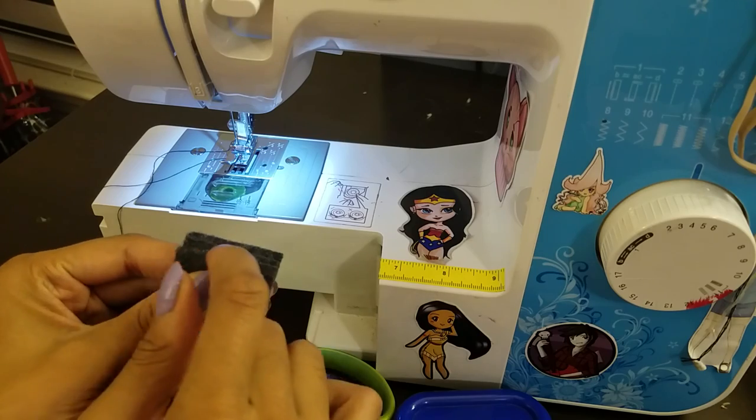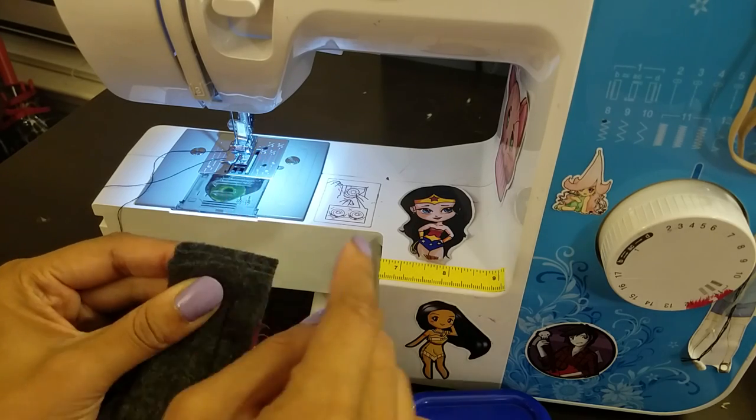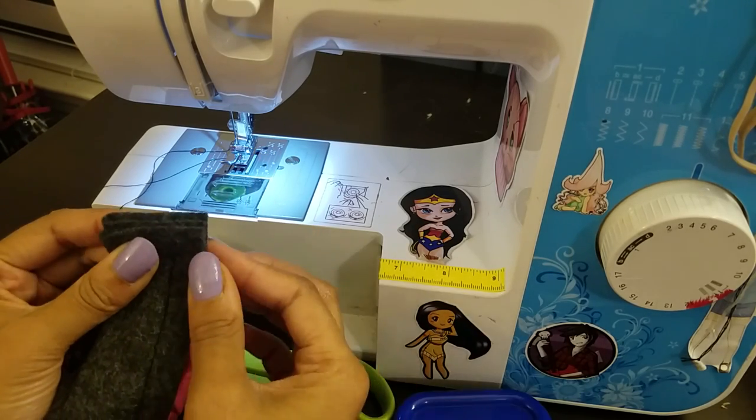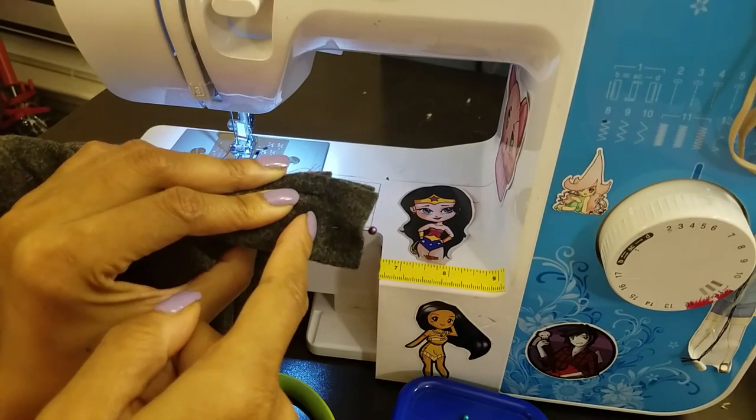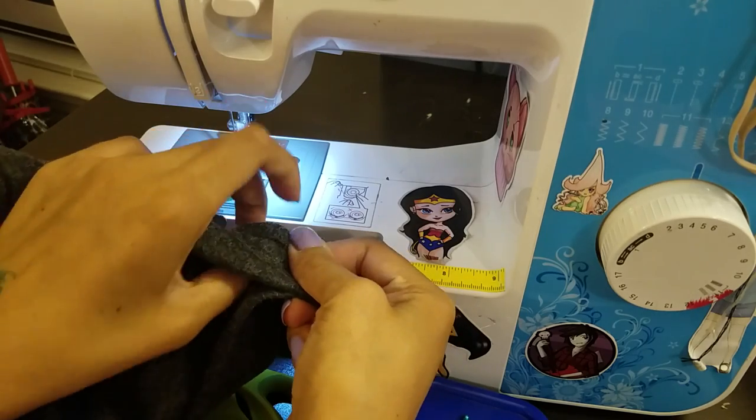And sometimes this side will be longer and then you will just cut off that edge, but this almost lines up pretty perfectly. And then you are going to sew from this point to this point. Make sure you keep the hat out of the way and it does not get caught in those stitches.